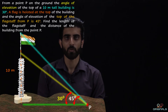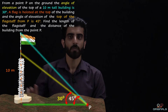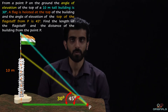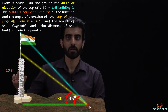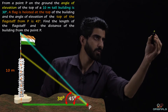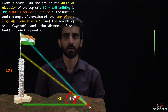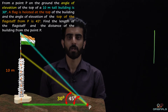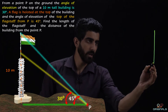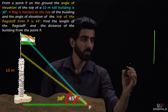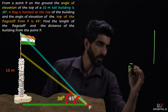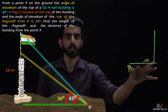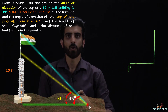First process: हम given conditions के according एक free-handed right angle triangle diagram construct करेंगे। सबसे पहले एक 10 meter building construct करते हैं। यह 10 meter building है, और इस building के base से एक point P mark करते हैं। Building के base से point P तक का distance हमें पता नहीं है और वो हमें find out करना है।